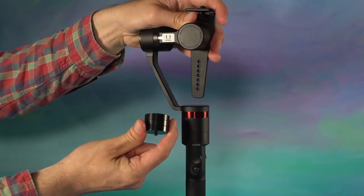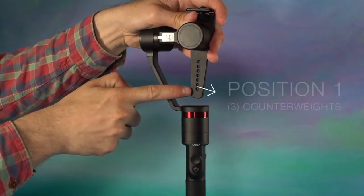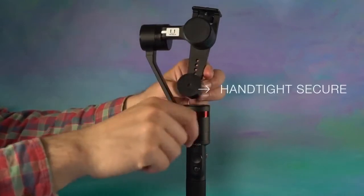For the theta, it will require three counterweights on the motor side in position one. Install the counterweights till hand tight.